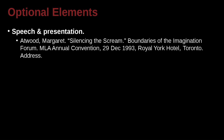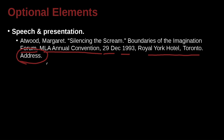You need optional information to help people understand what the source is and where it's from. Here's another example: Atwood, Margaret — 'Silence the Screaming' — inside the Boundaries of the Imagination Forum at the MLA Annual Convention. We can add extra information to help the reader find it, including the exact date and location. At the end, we have optional information just to help the reader understand: this is an address — a speech that Margaret Atwood gave at this conference or convention.